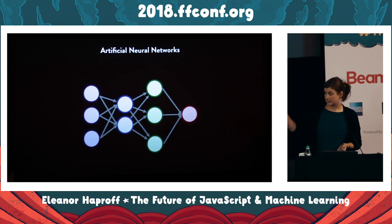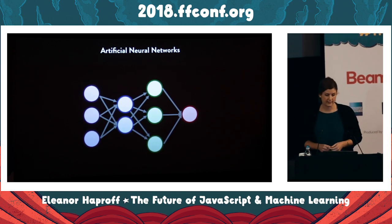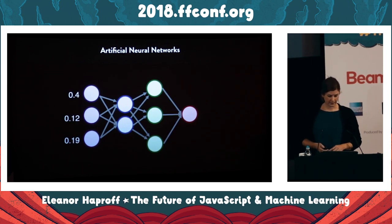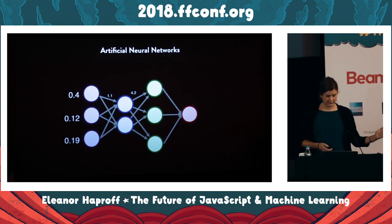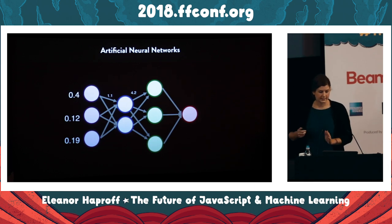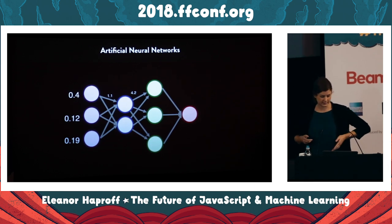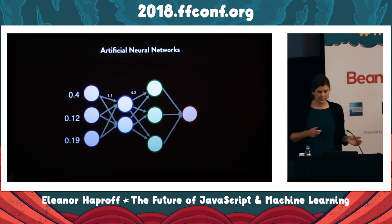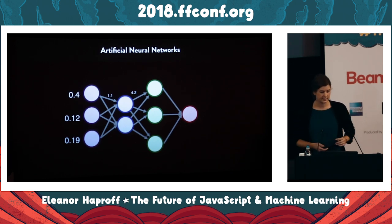These two hidden layers are dense layers, which means they're fully connected. We would assign weights to each input. The data flows from the input layer, hits the neuron in the next layer, and then if activated based on the weights, it will send the outputs forward to the connected neurons in the next layer.